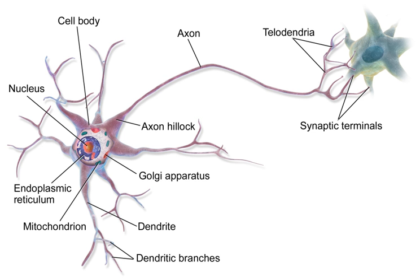Much of what is known about axonal function comes from studying the squid giant axon, an ideal experimental preparation because of its relatively immense size — 0.5 to 1 millimeter thick, several centimeters long. Fully differentiated neurons are permanently post-mitotic; however, stem cells present in the adult brain may regenerate functional neurons throughout the life of an organism. Astrocytes are star-shaped glial cells that have been observed to turn into neurons by virtue of the stem cell characteristic pluripotency.